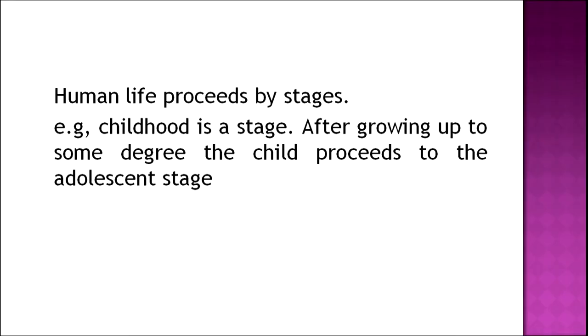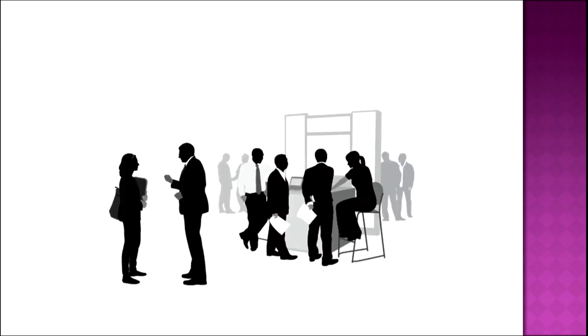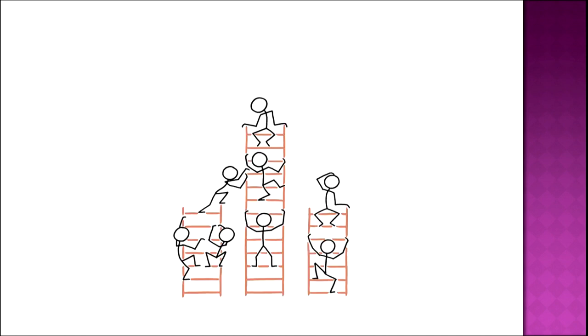Let us begin with the first objective — developmental tasks. Human life proceeds by stages; for example, childhood is a stage. After growing up to some degree, the child proceeds to the adolescent stage. Each stage is characterized by a dominant feature, a leading characteristic which gives the period its uniqueness. For example, a child is expected to go to school and study, and as an adult, the adult is expected to work and support the family. These are the different unique features of a particular age, and each period is called a stage.